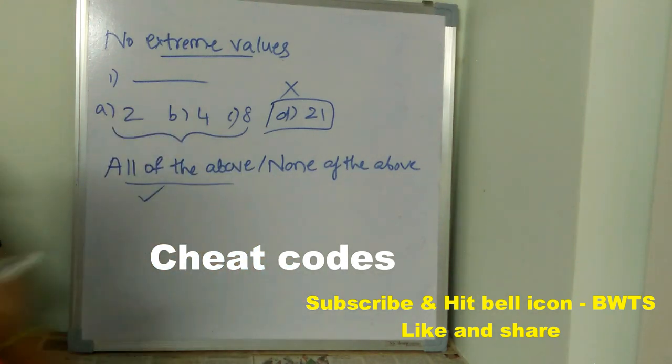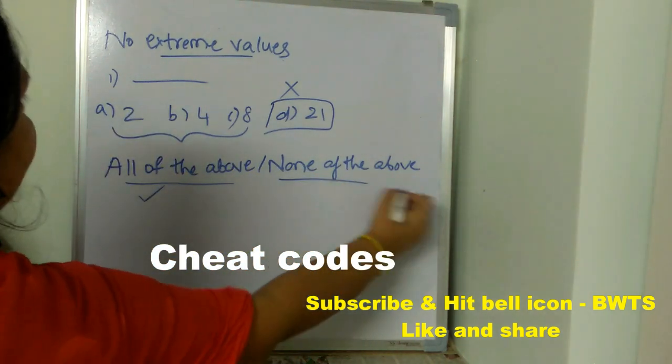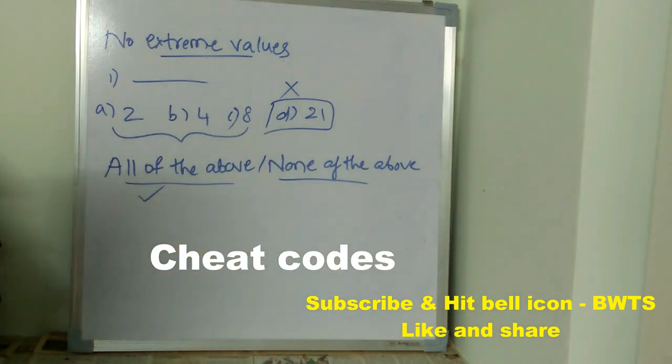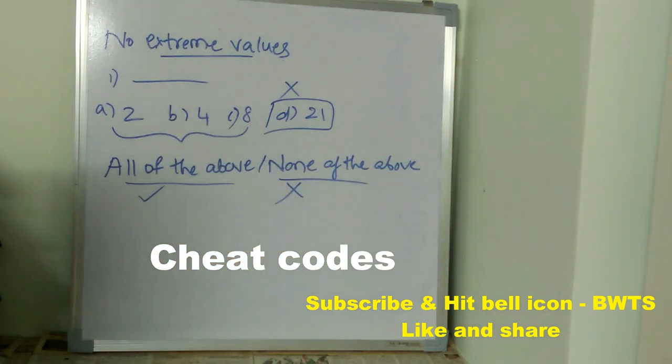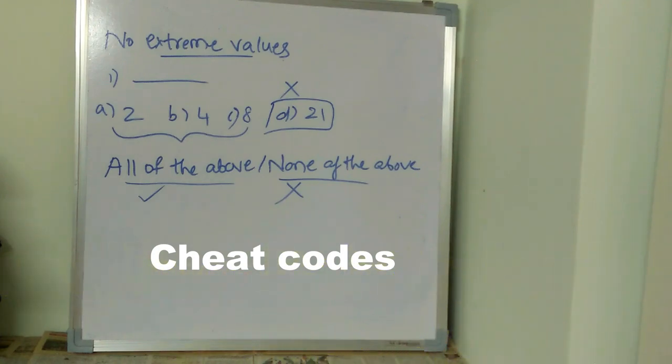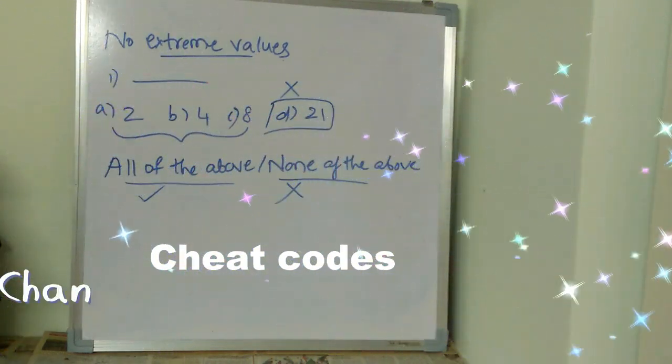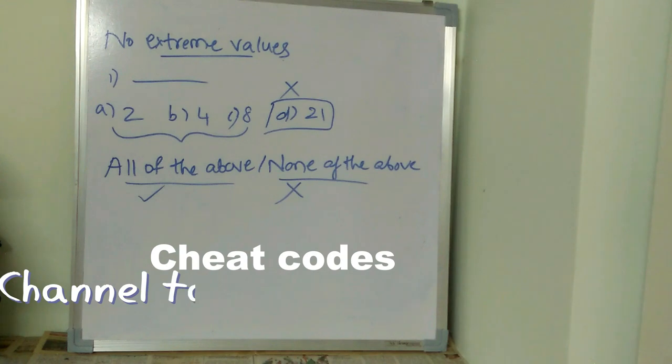If you find none of the above as one of the option and if you don't know what is the correct answer, don't go for it. There are very least probabilities of none of the above being the correct answer. So that's why always go for all of the above and never go for none of the above.